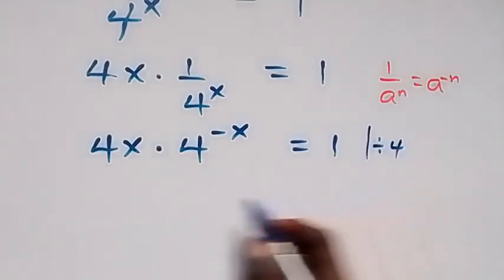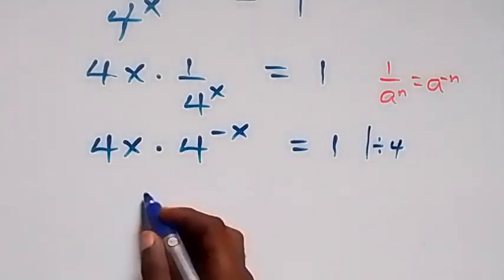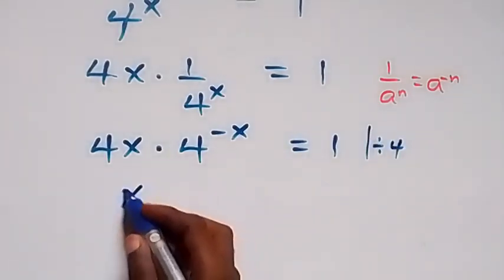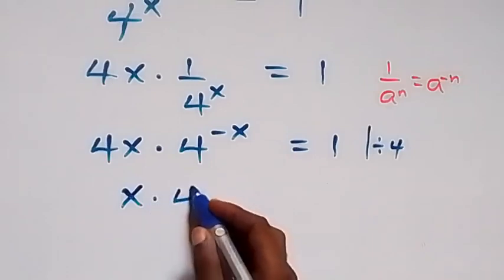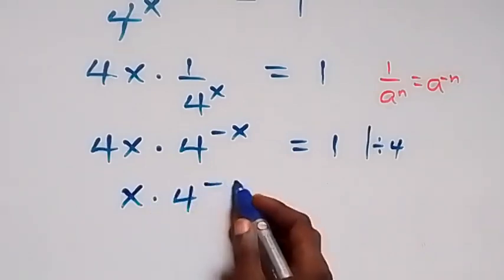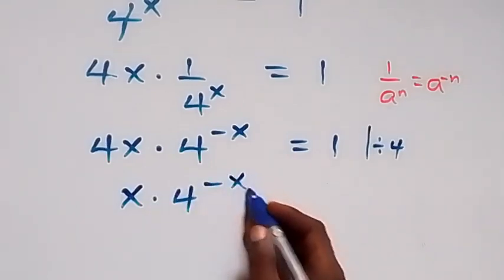Then, the 4 we cancel out here, and we have x times 4 raised to power minus x.